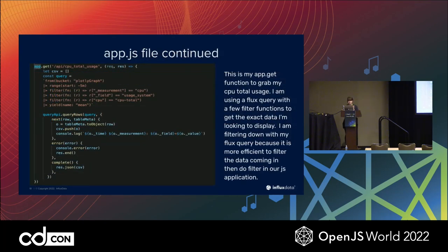This is just a continuation of that file. Specifically here, what I'm doing is querying with Flux. The constant query is using our internal scripting language called Flux. Basically I'm saying, give me the data from the last five minutes — which is the range — and then filter down through there. One thing to also note is that it's normally much more efficient to filter with a Flux query than to try and filter data out in JavaScript. It's just going to be more efficient if you do it first in Flux.